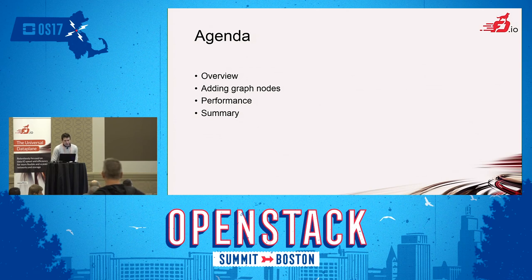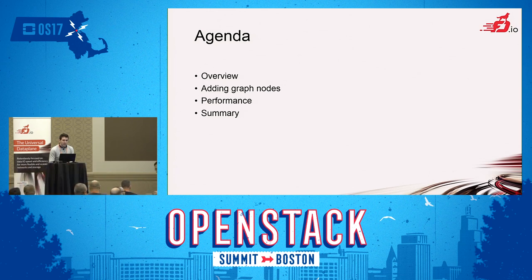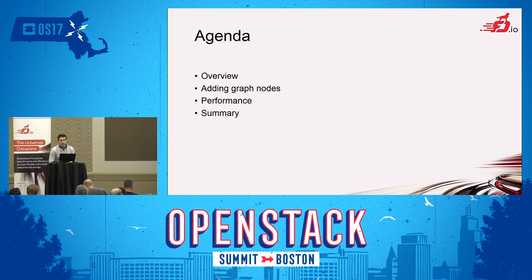So this will be the agenda. I'll talk about a high-level overview of how VPP works and the functionality and features that it provides. I'll give an example of how to modify and add graph nodes — in this case the work I did for VPP integrating Cryptodev as a plugin. I'll also talk about performance and how VPP can scale almost linearly, and a final summary.